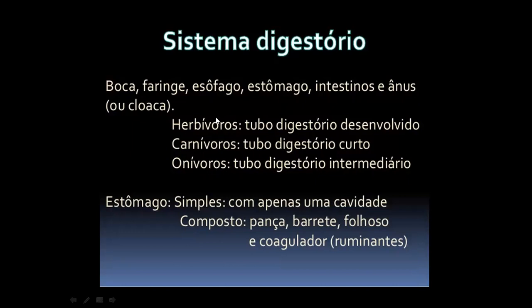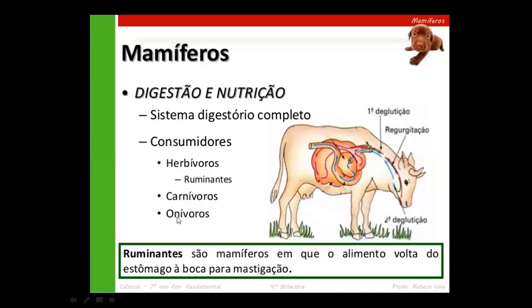Tem um grupo especial chamado ruminantes, como a vaca, que têm o estômago dividido em quatro câmaras. Eles engolem o alimento, que cai na primeira câmara onde bactérias digerem a celulose. Depois o animal regurgita e mastiga de novo. Não são quatro estômagos, são quatro câmaras. O Renato vai detalhar a função de cada câmara na aula do sistema digestório.